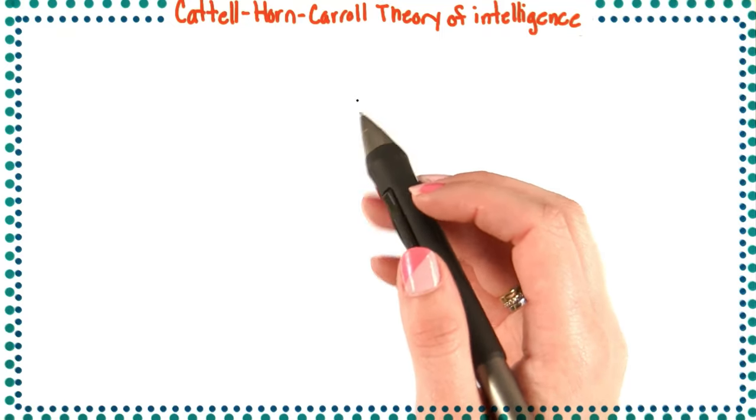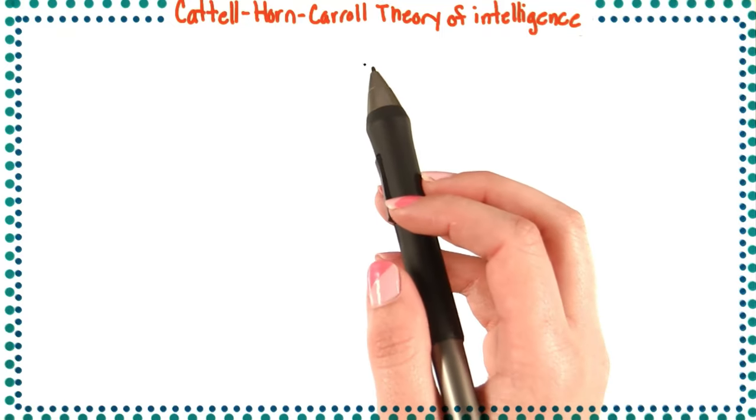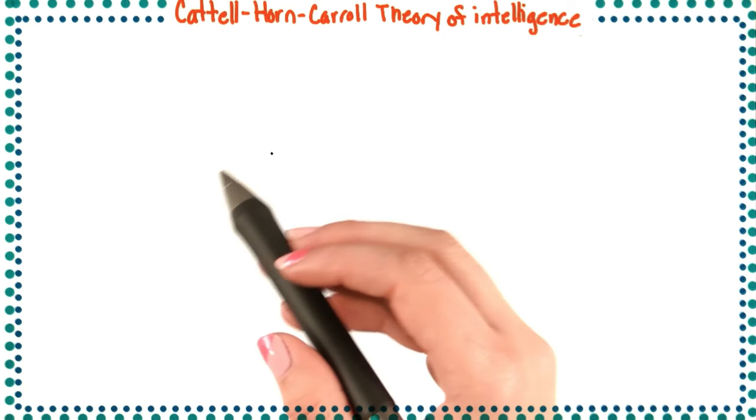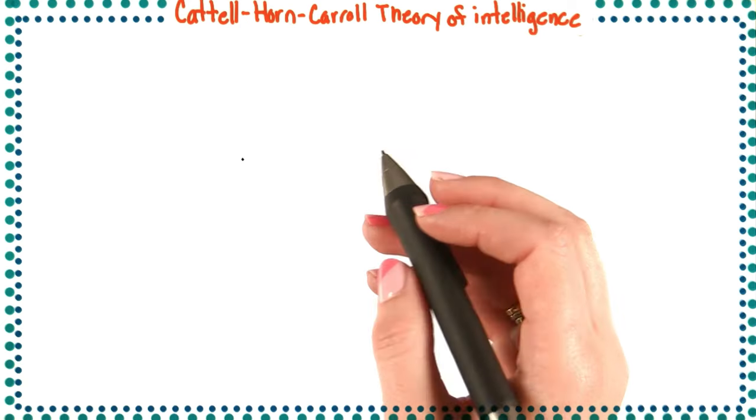So, as I said, there's a theory of intelligence called the Cattell-Horn-Carroll theory of intelligence. This is the best known compromise between the singular intelligence theory and the multiple intelligences theory.